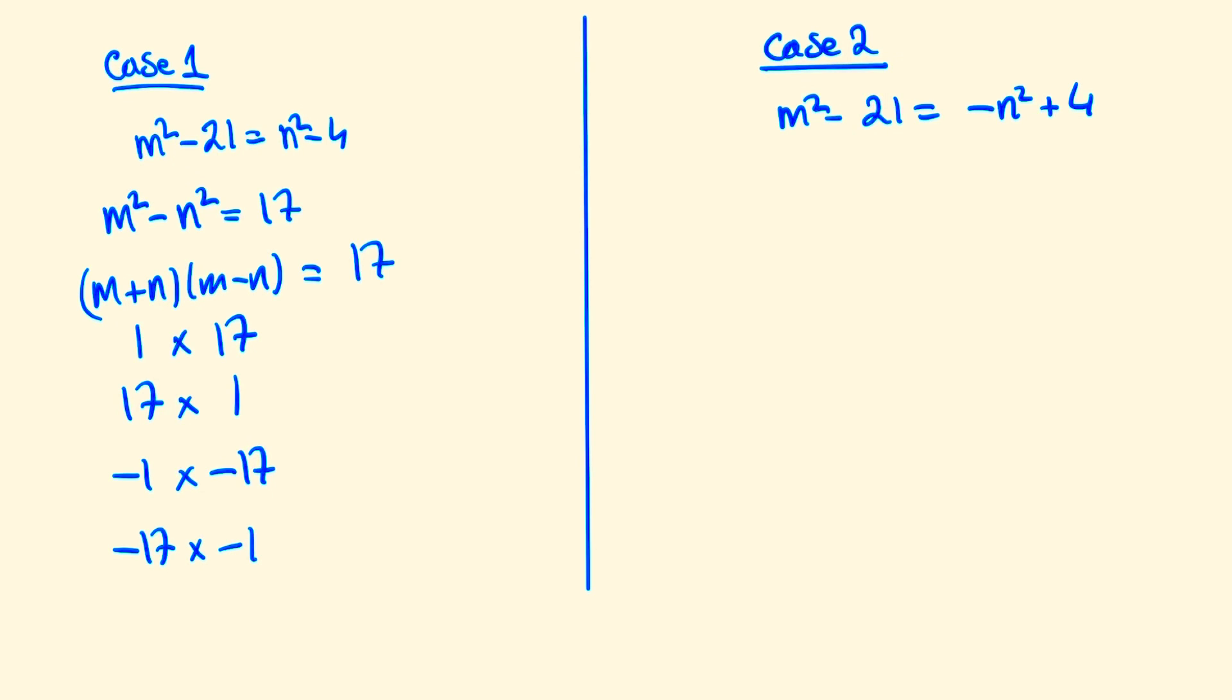In the first case where m + n = 1 and m - n = 17, that leaves us with m = 9 and n = -8. In the second case we have m = 9 and n = 8.